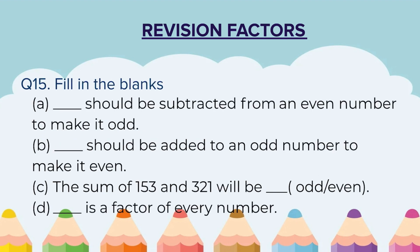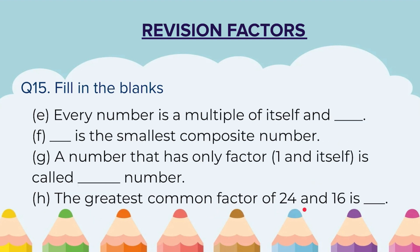Question 15: Fill in the blanks. A) Blank should be subtracted from an even number to make it odd. B) Blank should be added to an odd number to make it even. C) The sum of 153 and 321 will be blank — odd or even. You don't have to actually add; by just looking at these two numbers you can tell. D) Blank is a factor of every number. E) Every number is a multiple of itself and blank. F) Blank is the smallest composite number. G) The number that has only factors 1 and itself is called a blank number. H) The greatest common factor of 24 and 16 is blank.